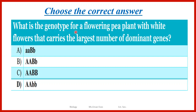We ask: what is the genotype for the flowering bee plant with white flowers? White flower is the recessive trait that carries the largest number of dominant genes. The first one will be white because it has only one dominant gene in the second pair. The second one has three dominant genes, so its color will be red — we don't want that.